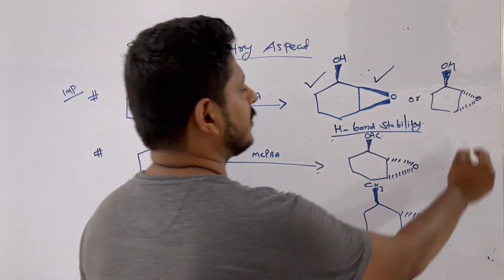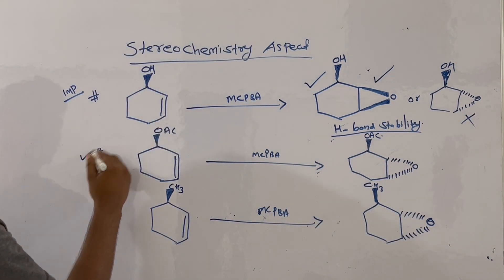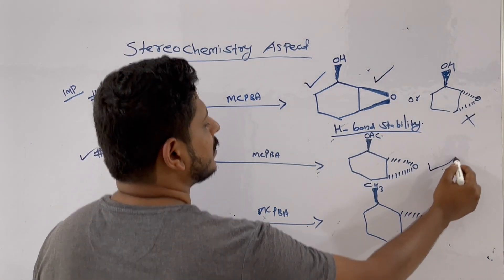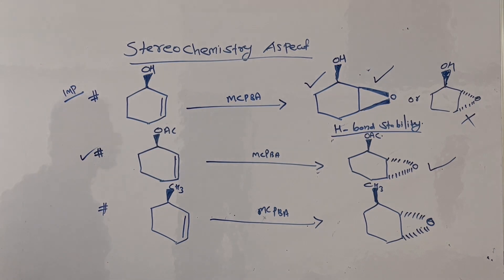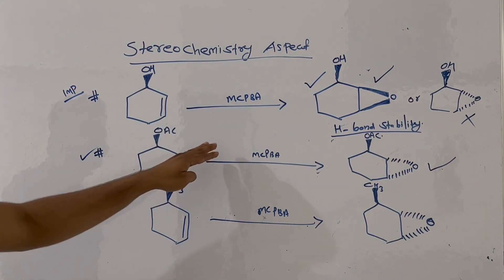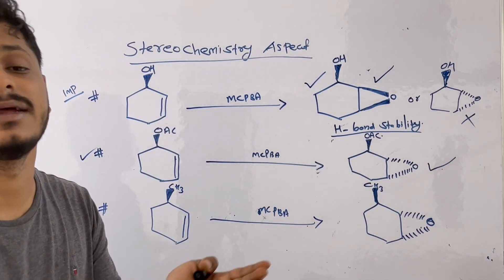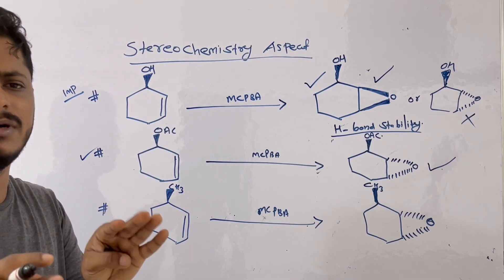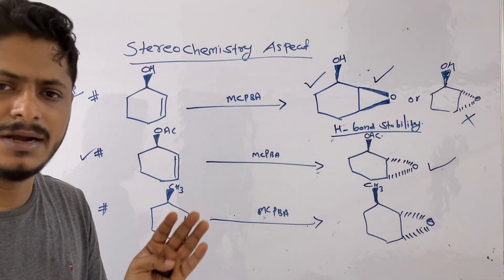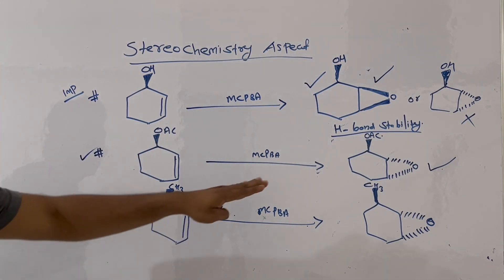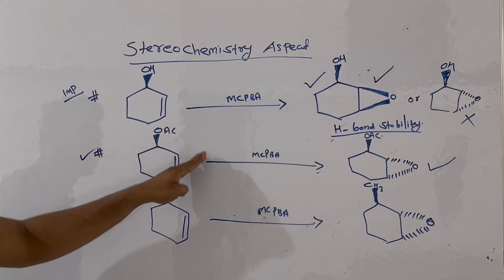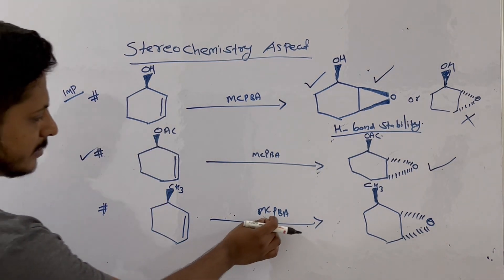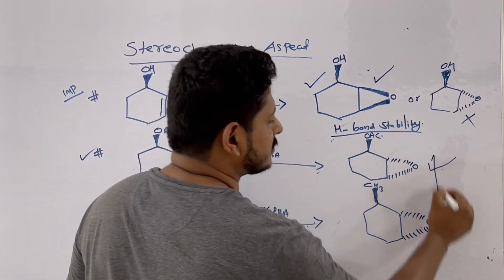So you won't get the opposite product. In the second example, if you replace the OH group with an OAc group and treat with mCPBA, you predominantly get the epoxide below the plane, because OAc won't give any hydrogen bonding. Without hydrogen bonding, mCPBA attacks under steric influence — OAc is a bulkier group above the plane, so mCPBA attacks from below the plane. Similarly, if you have a CH₃ group above the plane, epoxidation occurs below the plane due to steric hindrance.